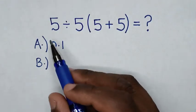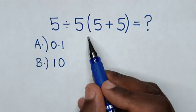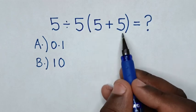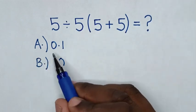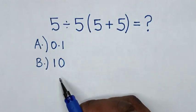Hello! How to solve 5 divided by 5 brackets 5 plus 5 by selecting between the answers A, 0.1, B, 10.